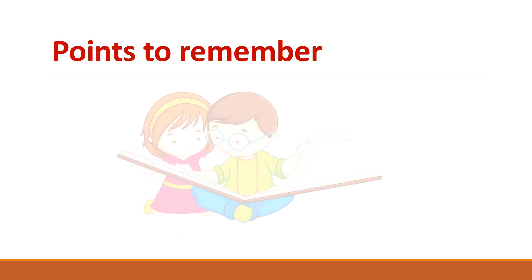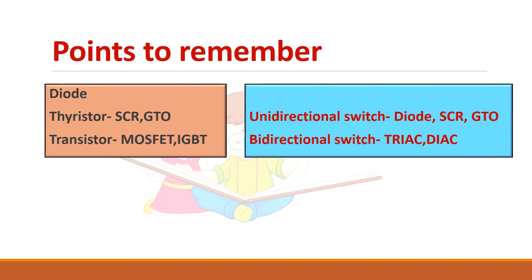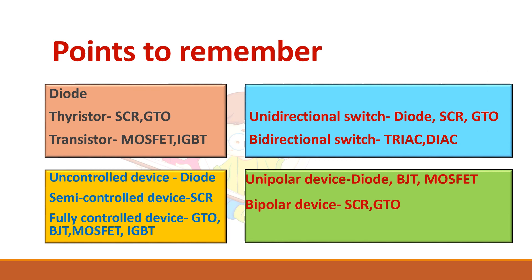To summarize the key points: power electronic devices are classified into three types — diode, thyristor, and transistor. They are further classified into unidirectional or bidirectional switches based on the direction of current they carry. Based on controllability, they can be uncontrolled, semi-controlled, or fully controlled devices. And based on the polarity of voltage they can block, they are classified as unipolar or bipolar voltage blocking devices.